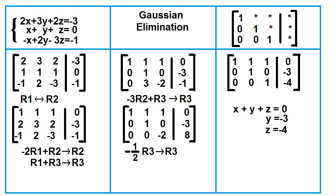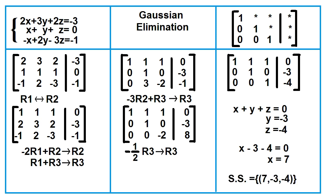To find x, just substitute the values of y and z. x minus 3 minus 4 equals 0, so x equals 7. The solution set is 7, negative 3, and negative 4.